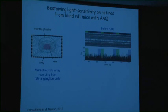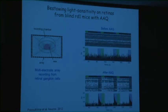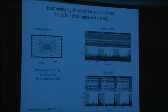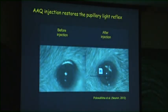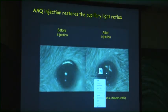If you apply the AAQ compound for just 15 minutes and then wash it away, the effect persists. Now all ganglion cells respond robustly to light — light onset causes a burst of action potential firing, which subsides, and another wavelength returns activity to baseline. We have electrophysiological evidence that this molecule works on many surviving neurons in the retina, and behavioral experiments showing restored light-sensitive behavior.